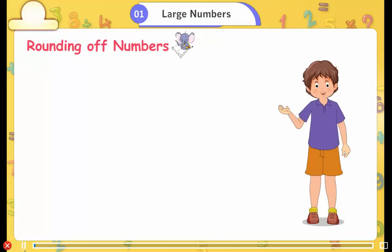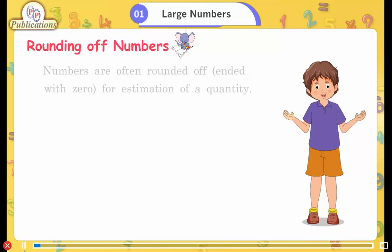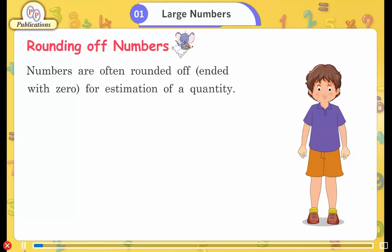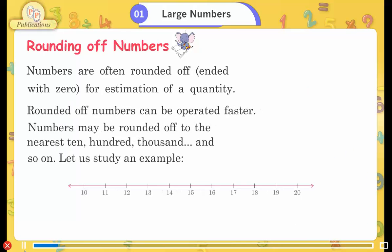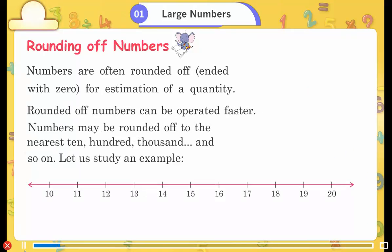Rounding off numbers. Numbers are often rounded off — ending with zero — for estimation of a quantity. Rounded-off numbers can be calculated faster. Numbers may be rounded off to the nearest ten, hundred, thousand, and so on.